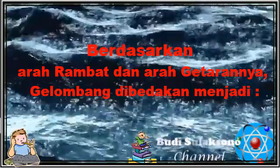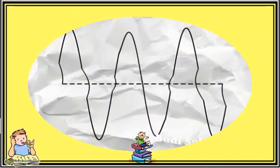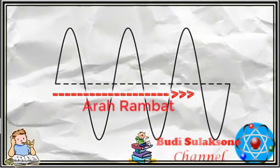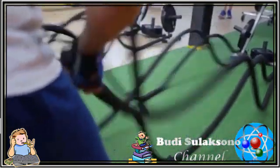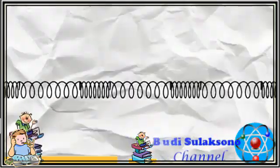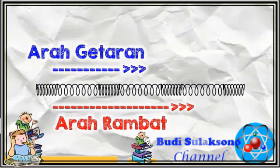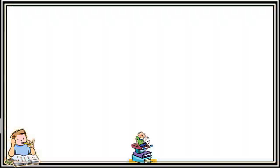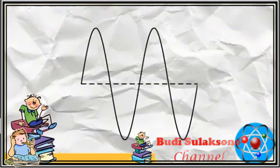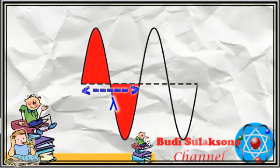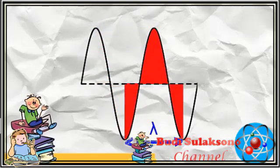Berdasarkan arah rambat dan arah getarannya, gelombang dibedakan menjadi gelombang transversal dan gelombang longitudinal. Gelombang transversal adalah gelombang yang arah rambatannya tegak lurus terhadap arah getarannya. Contoh gelombang ini dapat Anda lihat pada gelombang air atau gelombang tali. Pada gelombang transversal, satu gelombang sama dengan jarak dari satu bukit dan satu lembah gelombang, atau jarak puncak gelombang ke puncak gelombang berikutnya, atau jarak dari dasar lembah ke dasar lembah gelombang berikutnya.